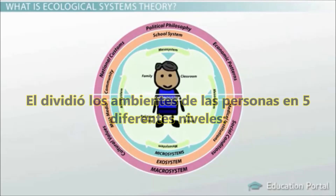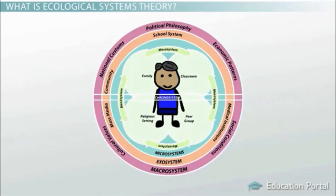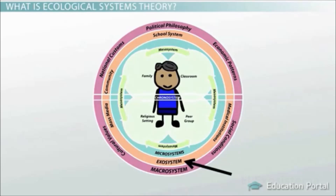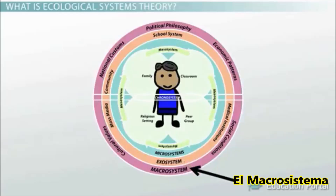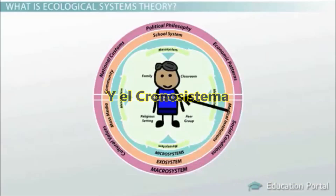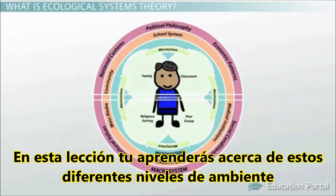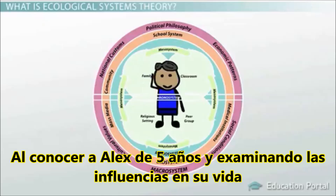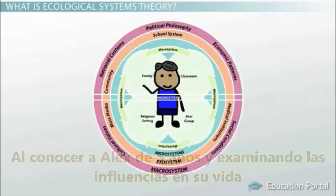He divided the person's environment into five different levels: the Microsystem, the Mesosystem, the Exosystem, the Macrosystem, and the Chronosystem. In this lesson, you will learn about these different environmental levels by meeting five-year-old Alex and examining the influences in his life.